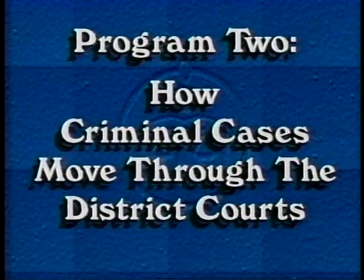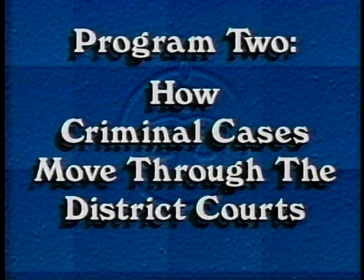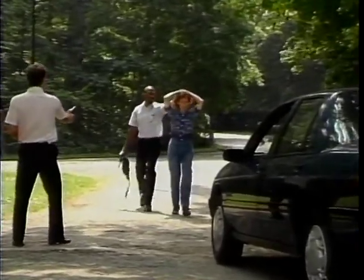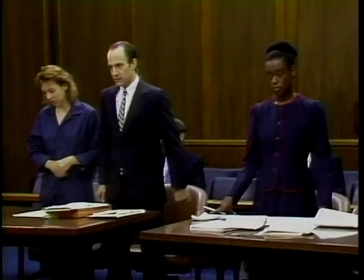We'll use a hypothetical criminal case to show you how the features of the Act affect your docketing responsibilities. The case, United States v. Smith & Jones, is a variation on a case used in another Federal Judicial Center program, How Criminal Cases Move Through the District Courts — Program 2 of the Center's five-part video series. It illustrates the major steps in the criminal process by tracking a two-defendant drug case from arrest through sentencing and post-judgment proceedings. If you are not familiar with the major steps of the criminal process, we strongly recommend that you watch that program before watching this one.